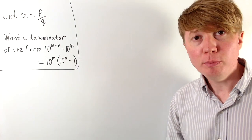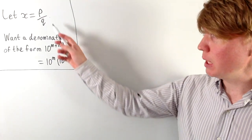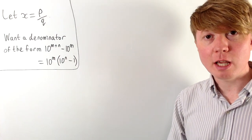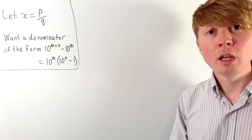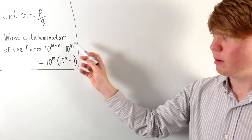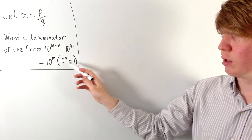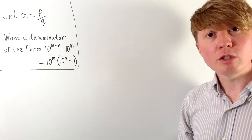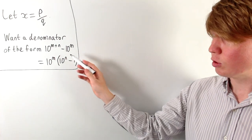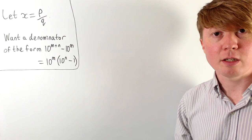The idea for our proof is we'll start with a rational number which we'll call p over q. Then we want to multiply p and q by the same integer so that we get a new denominator of the form some power of 10 minus another power of 10, which we'll factorise and write like this. Then there's just a short argument to show why if your denominator is of this form then you've got a recurring decimal.